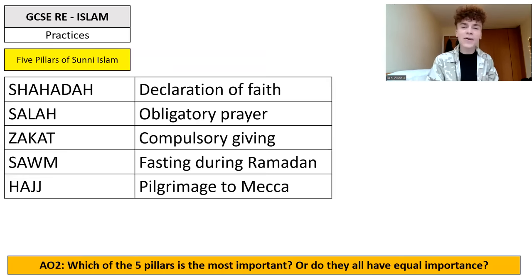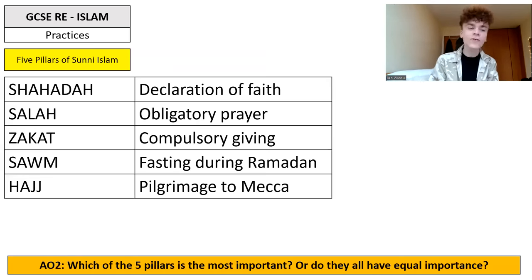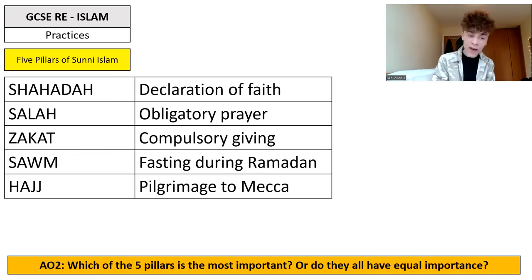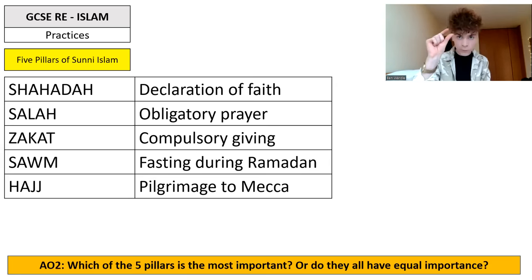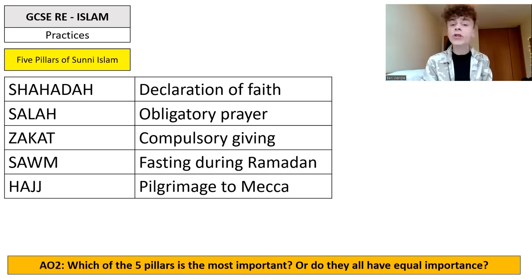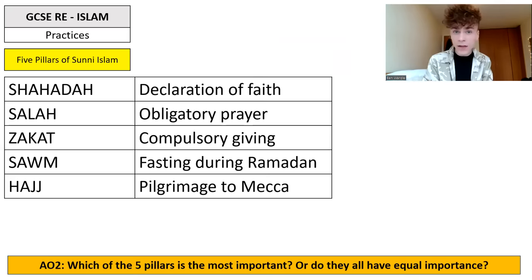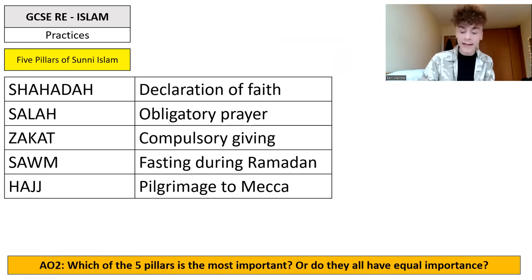Let's get started with the five pillars of Sunni Islam. The five pillars are: Shahada, the declaration of faith; Salah, which is obligatory prayer — five times a day for Sunni Muslims, though Shia Muslims may combine that into three times a day; Zakat, which is compulsory giving; Sawm, which is fasting during Ramadan; and Hajj, which is pilgrimage to Mecca.